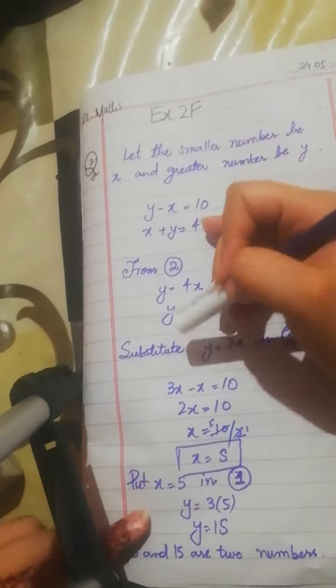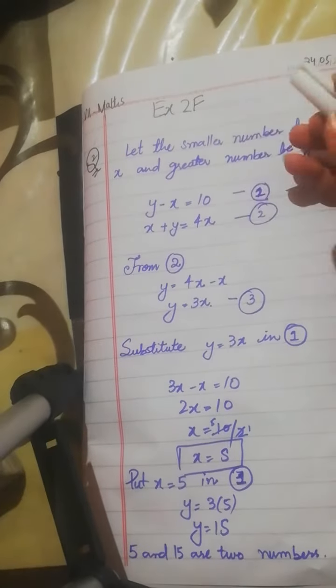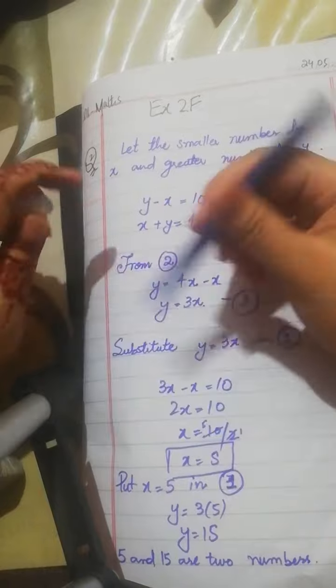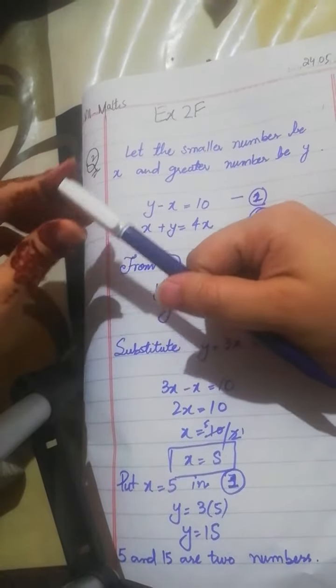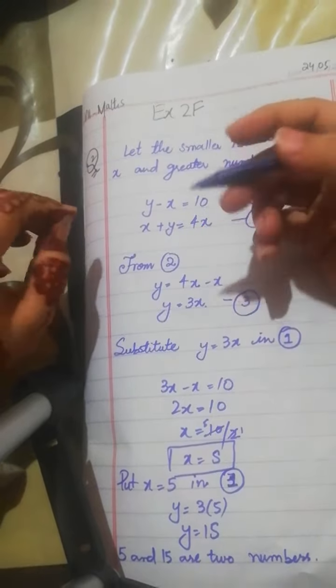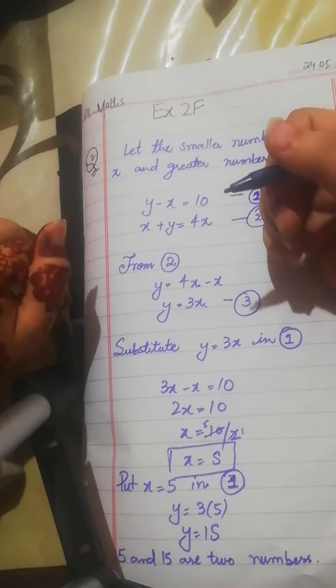Good morning grade 7. Moving on to question number 2 of exercise 2F. Here we have a statement that the difference between two numbers is 10 and the sum is 4 times the smaller number. Find the 2 numbers.